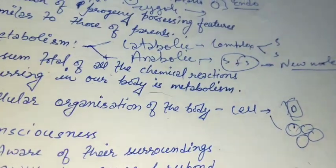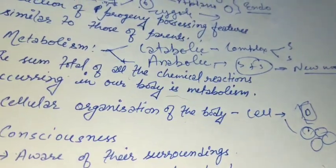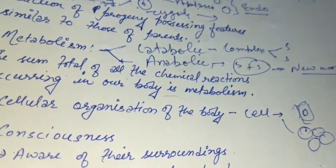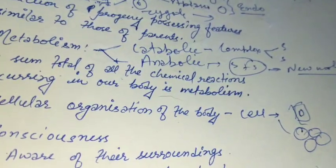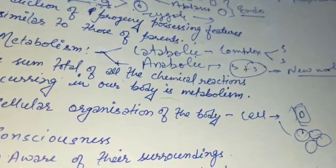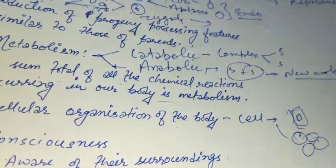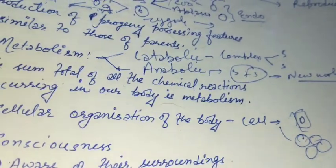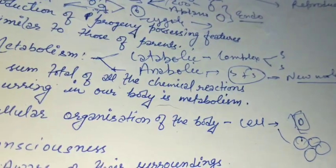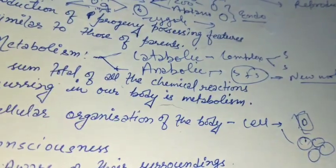Each cell contains cell organelles like nucleus, endoplasmic reticulum, and mitochondria in eukaryotic cells, while in prokaryotic cells these organelles are usually absent. In prokaryotes, a nucleus is present but it does not contain any nuclear membrane. The only cell organelles present in both eukaryotes and prokaryotes are the ribosome and the nucleoid.